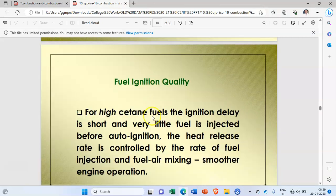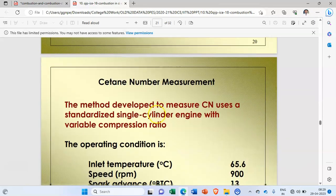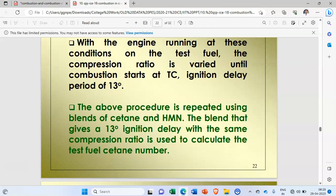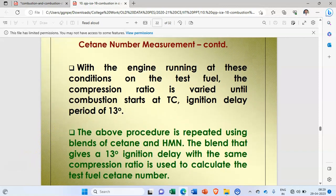Whenever in examination the question is asked regarding the cetane number, then you have to write down these points. I hope you understand what is the cetane number, what is the zero value and what is the maximum 100 value of the cetane number, and the names of those two components. Thank you very much.